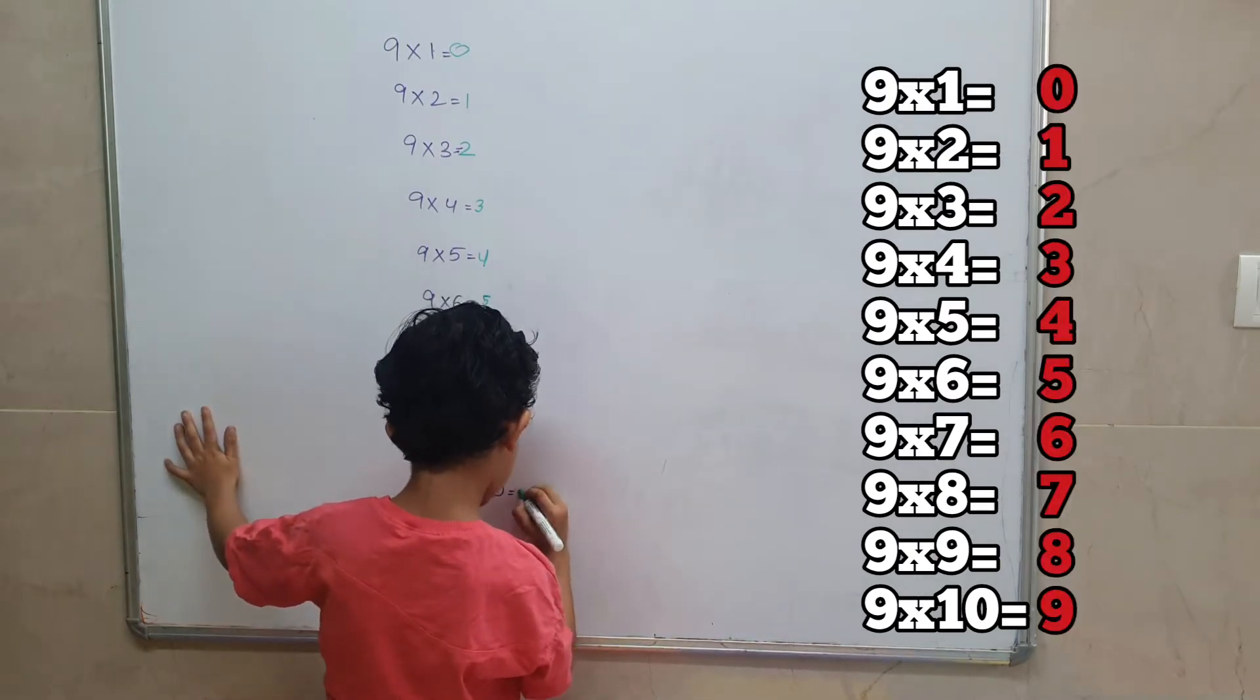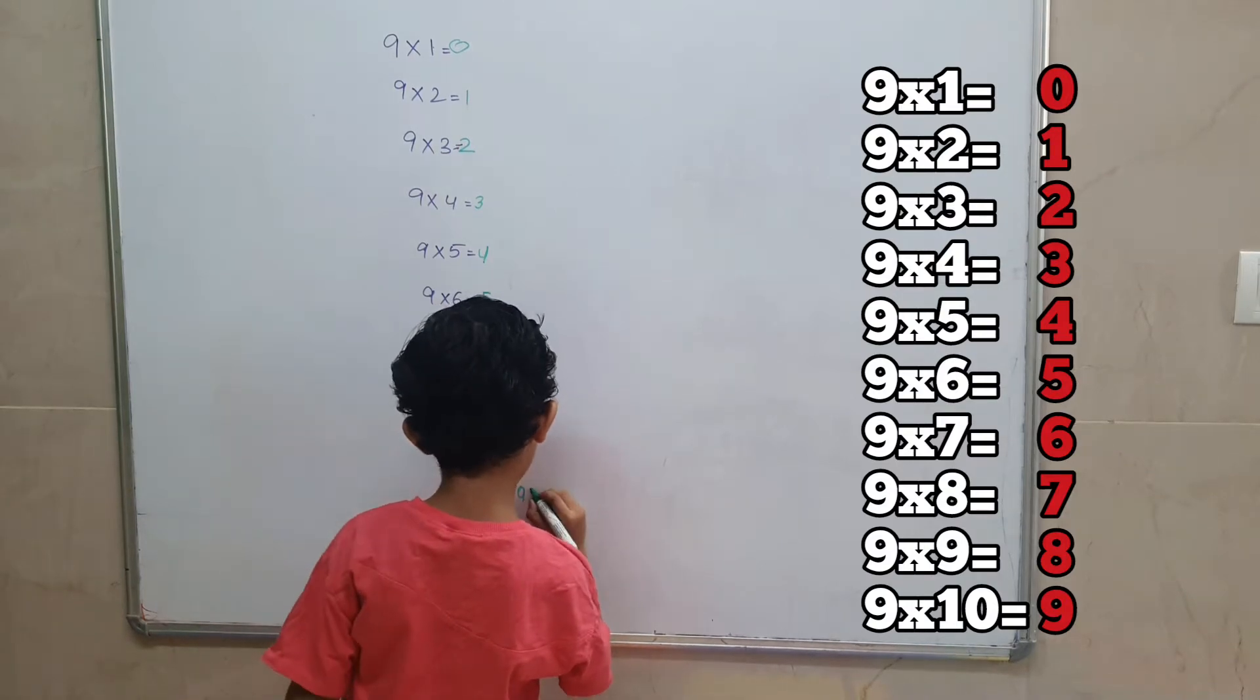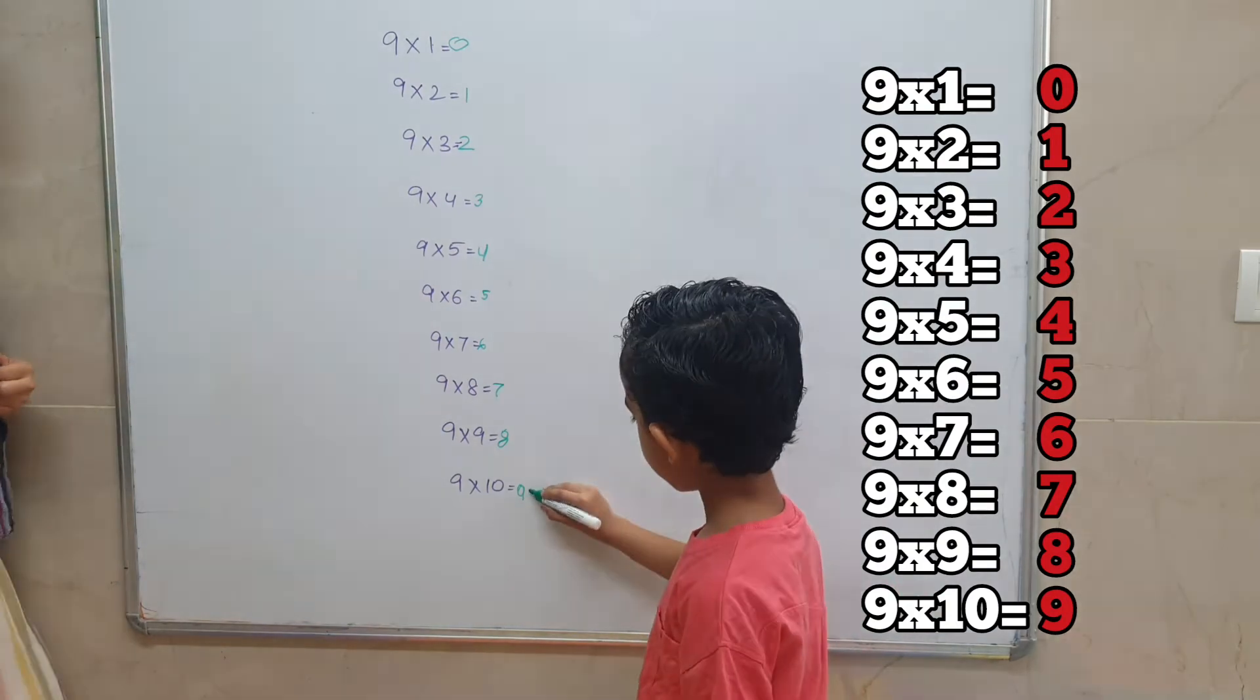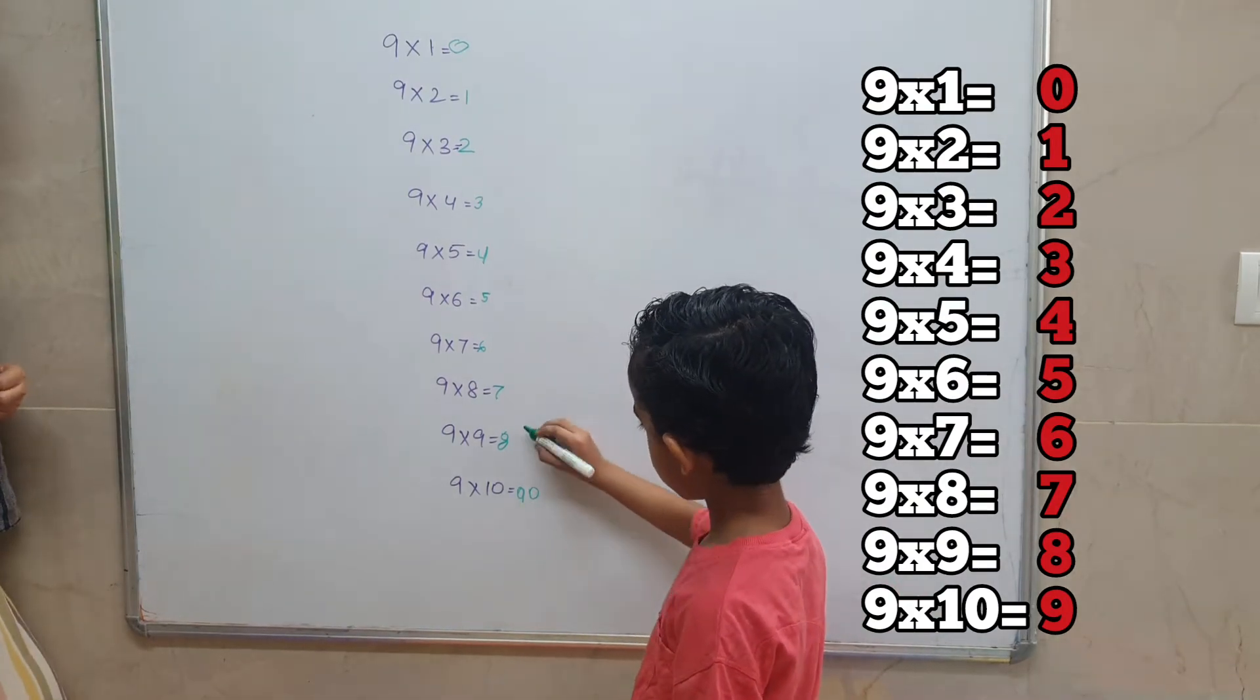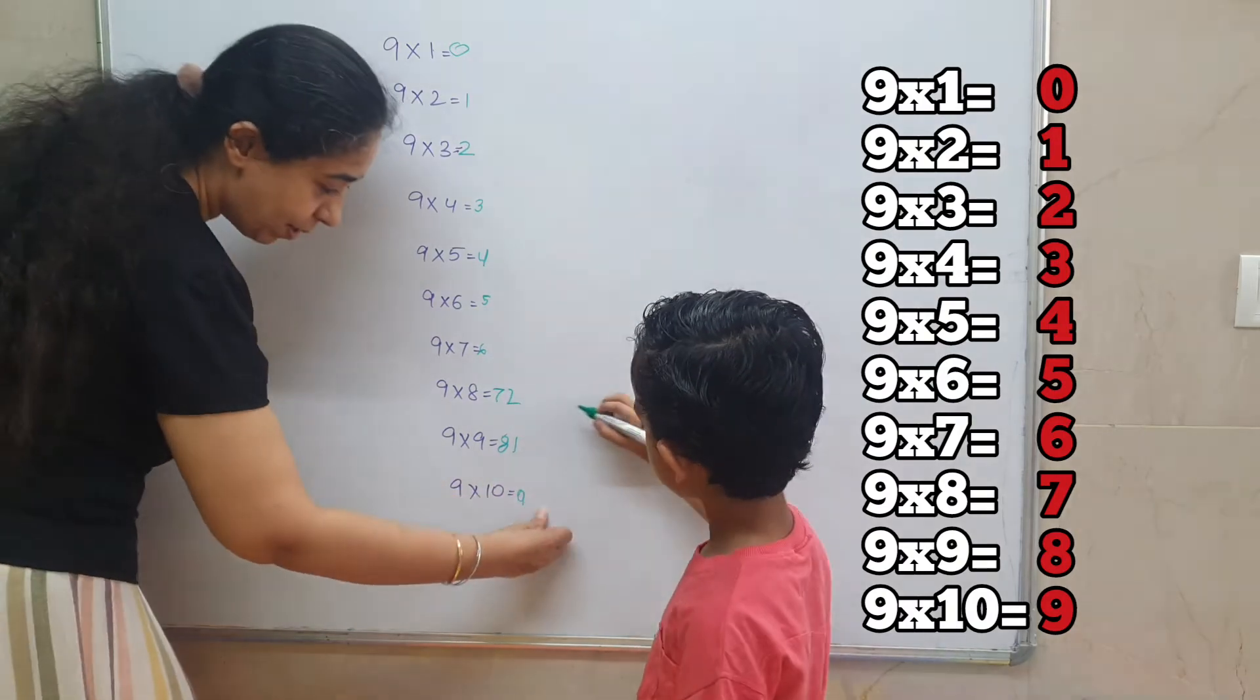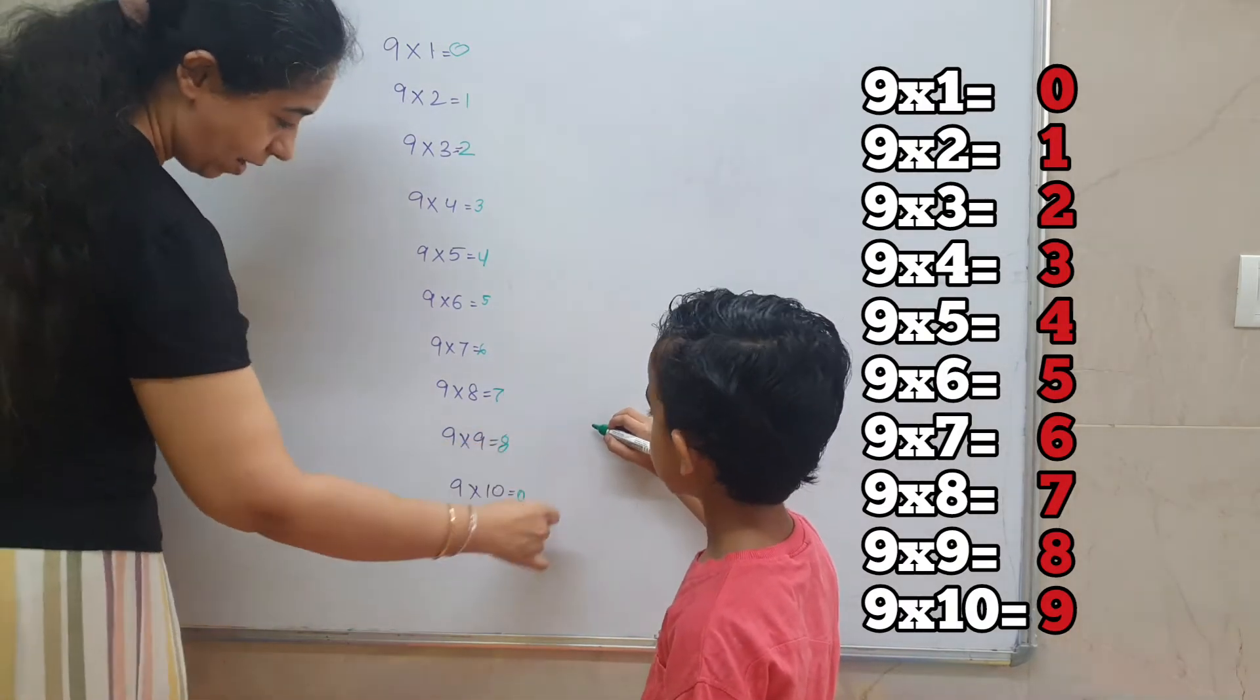Then zero. Wait, wait, wait. This is okay. Now you have written numbers from zero to nine, and again you start from zero.